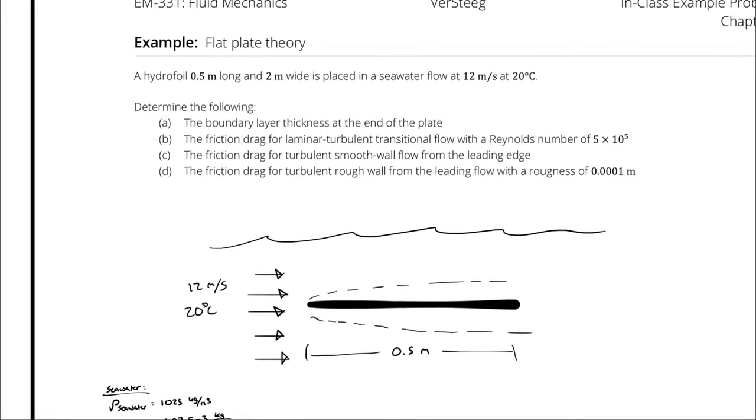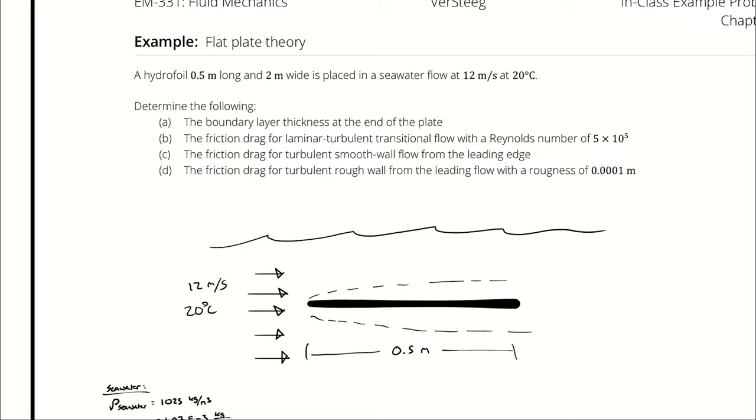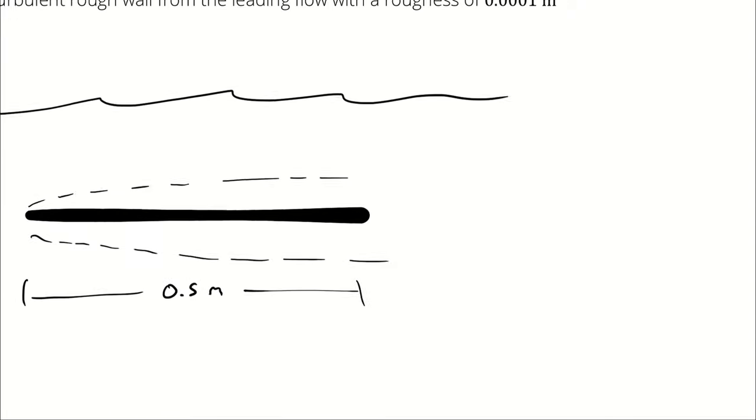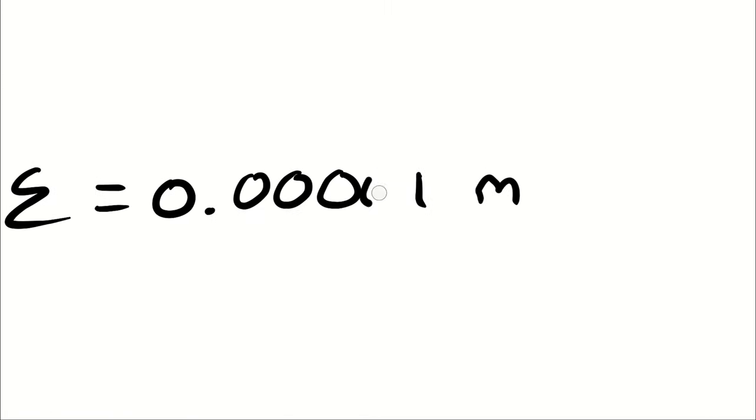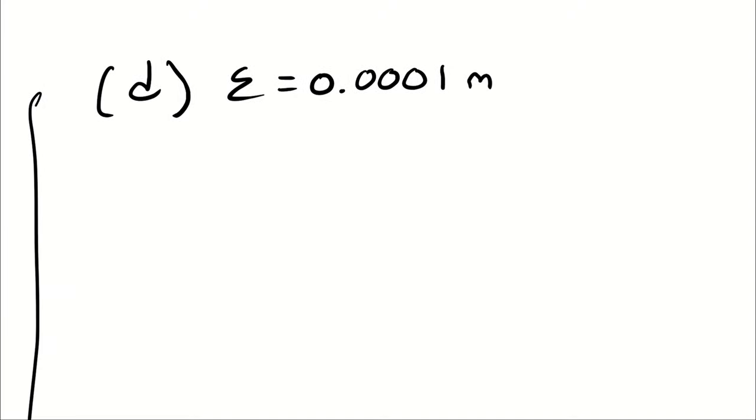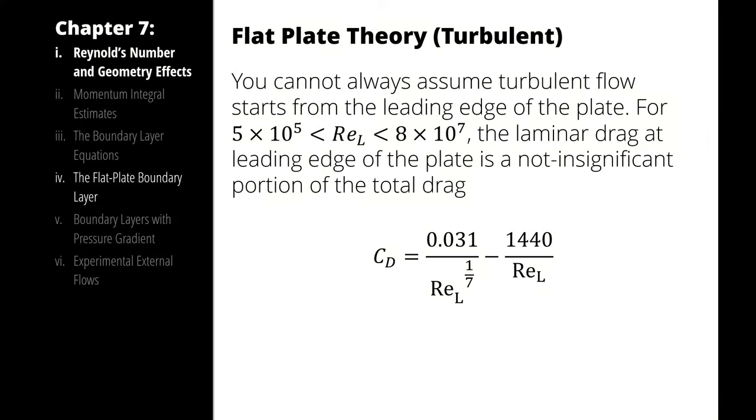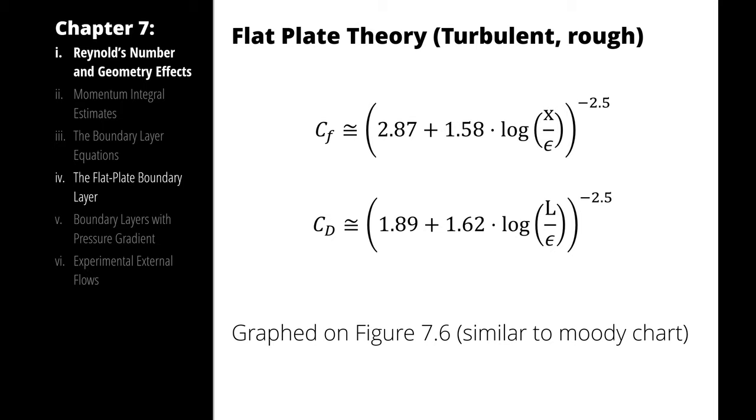So I repeat the process one more time, except this time I have turbulent flow with a roughness of 0.0001 meters. That was four zeros, right? No three zeros before the one and after the decimal. So for rough turbulent flow, we are discarding the laminar region entirely, and we are using this equation for the coefficient of drag.